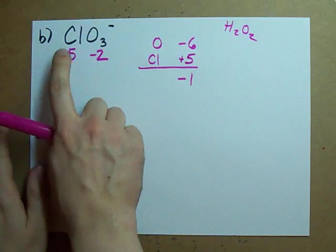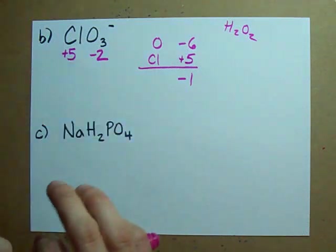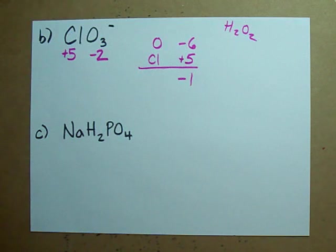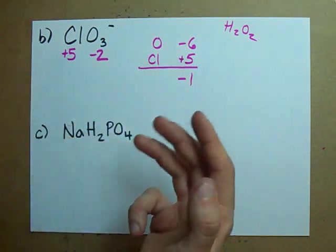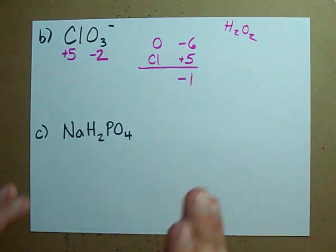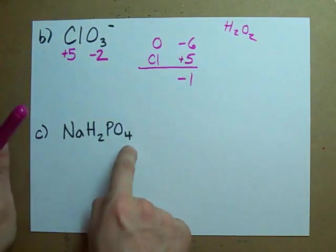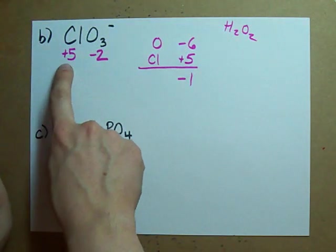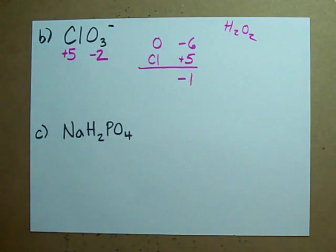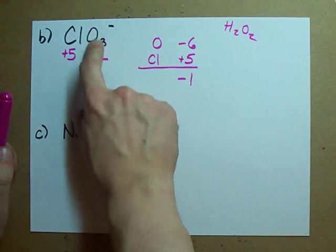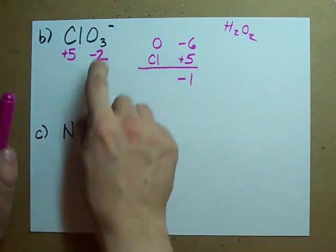Now notice, plus five is not chlorine's first choice of charge to have. It's a charge that it's allowed to have, and if you look up at a periodic table that shows the different valences each of the atoms can have, you'll see that there's a little plus five under the Cl.